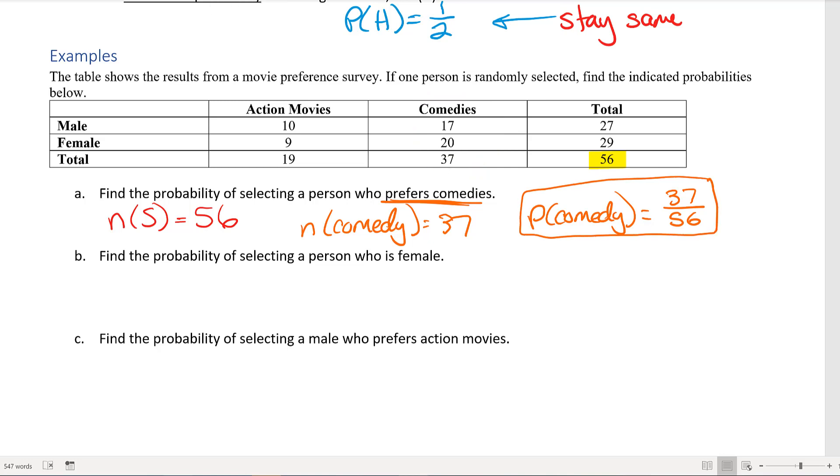Next we're trying to find the probability of selecting a person who is female. My n(S) is still staying the same because we're talking about the whole result, but I'm talking about the probability of just female. Where are the females? I don't care if they picked action or comedy, I just care that they're female. That's going to be 29 females. So the probability of picking someone that's female is going to be 29 out of 56.